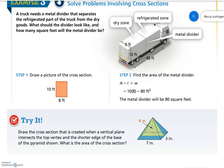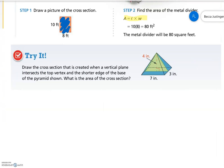Solve problems involving cross sections. A truck needs a metal divider that separates the refrigerated part of the truck from the dry goods. What should the divider look like and how many square feet would the metal divider be? If we cut it down the middle, it would be a rectangle, parallel to the back of the truck, which is 8 feet by 10 feet. The whole thing is area, so we use length times width. 8 times 10 is 80. The metal divider will be 80 square feet.